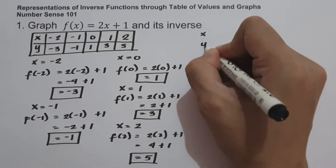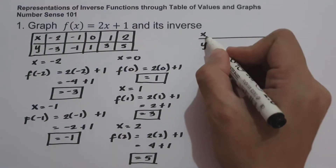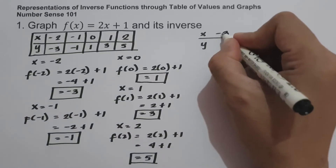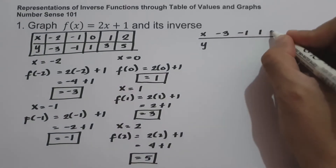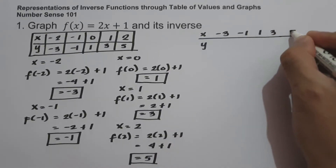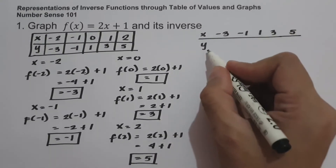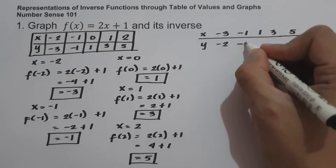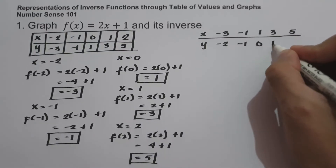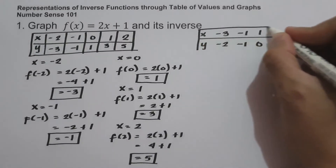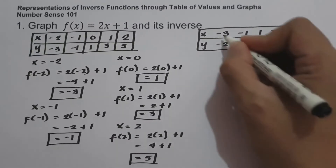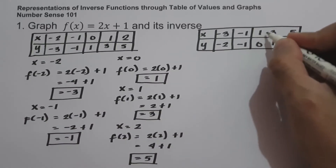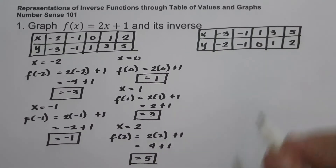Let us construct another table of values for the inverse function. The values of x are the y values of the original function: negative 3, negative 1, 1, 3, and 5. And the values of y are the x values of the original function: negative 2, negative 1, 0, 1, and 2. So the set of ordered pairs of the inverse function is: negative 3 and negative 2, negative 1 and negative 1, 1 and 0, 3 and 1, and 5 and 2.